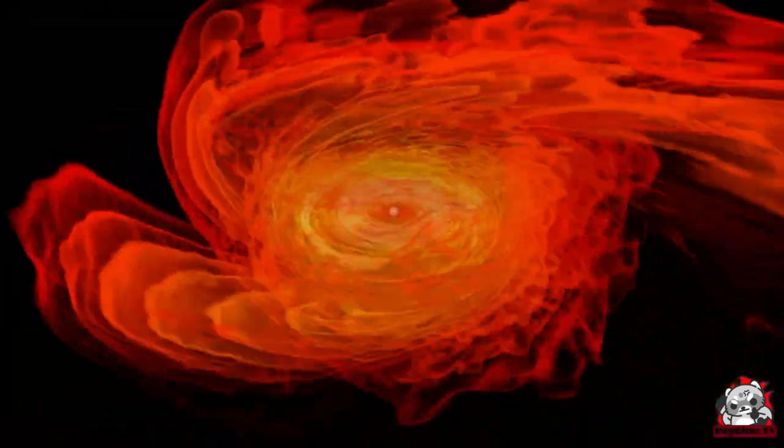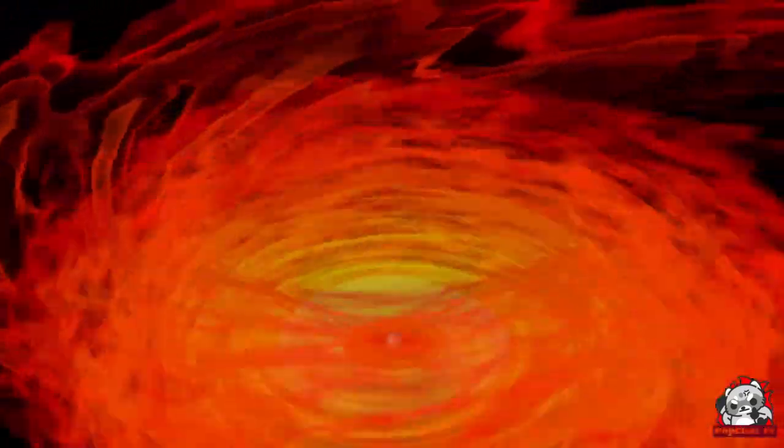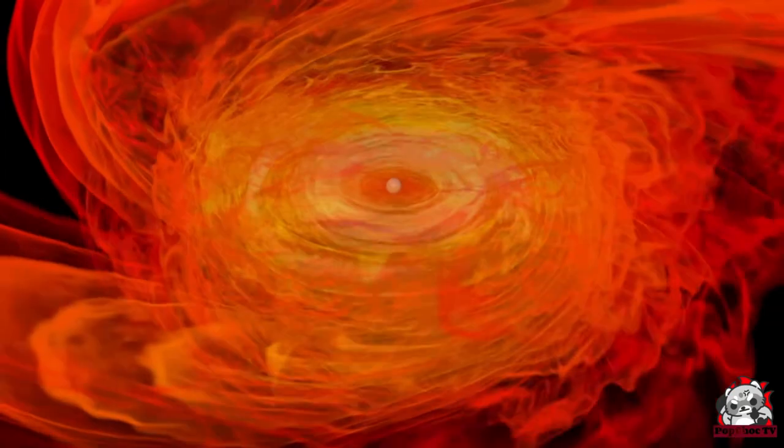Number 2 on our list is the puzzling phenomenon of gamma-ray bursts. Gamma-ray bursts, or GRBs, are the most powerful explosions in the universe, releasing more energy in a few seconds than our Sun will produce in its entire lifetime. First detected in the late 1960s, these enigmatic bursts are thought to result from the collapse of massive stars or the merging of neutron stars.